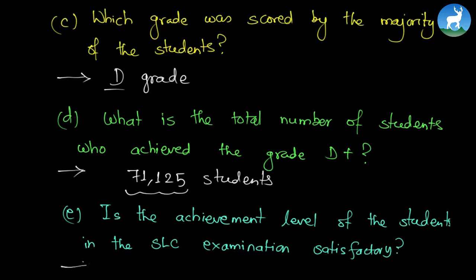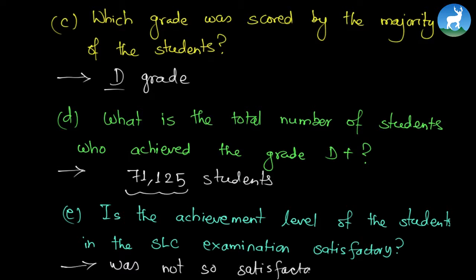The last question is: is the achievement level of the students in the SLC examination satisfactory? Why or why not? This depends on your reasoning, but analyzing the data from the pie chart shows that the SLC result was not so excellent. The total achievement level was not satisfactory because the majority of students got D+, D, or even E.